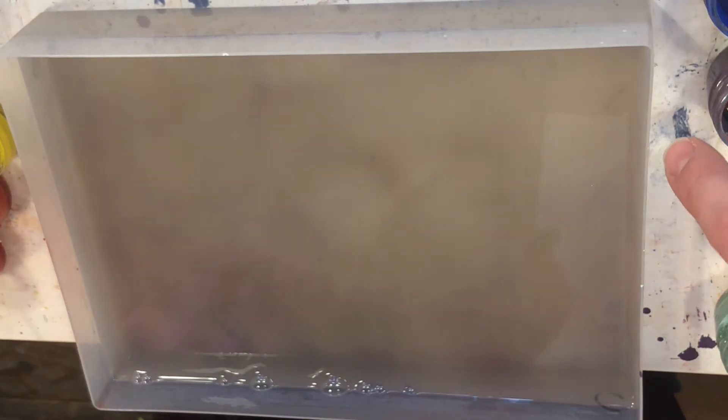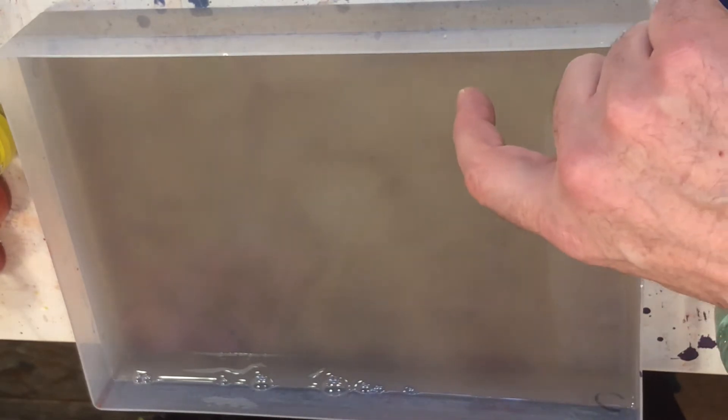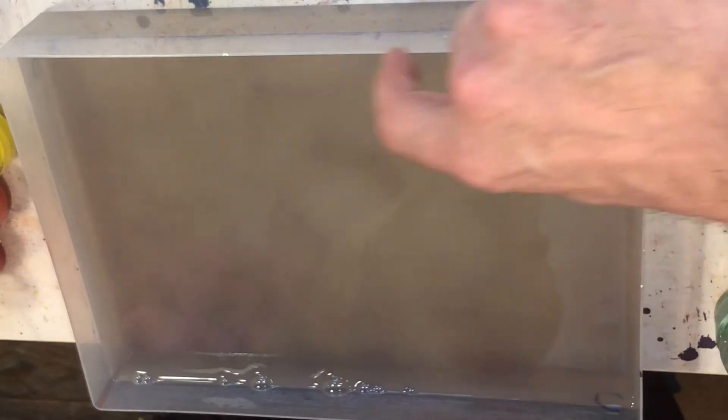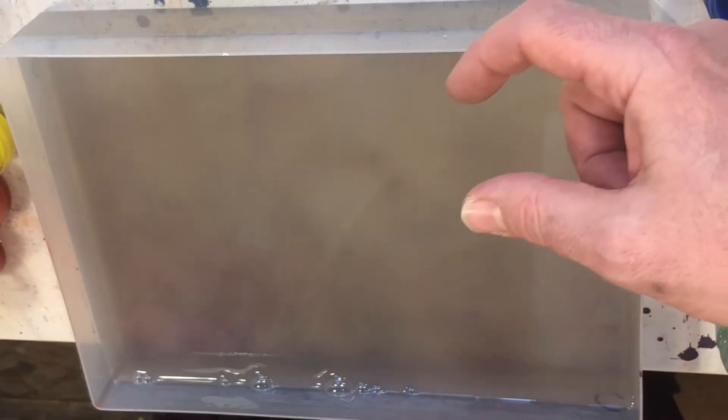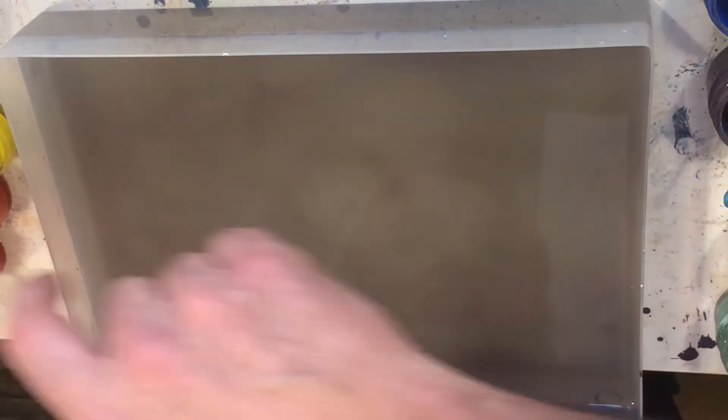So you can now experiment with how you put the paint on. So this, you had purple, blue and then green, didn't you? So you could put the purple on and then see what happens when you put the blue inside of it.